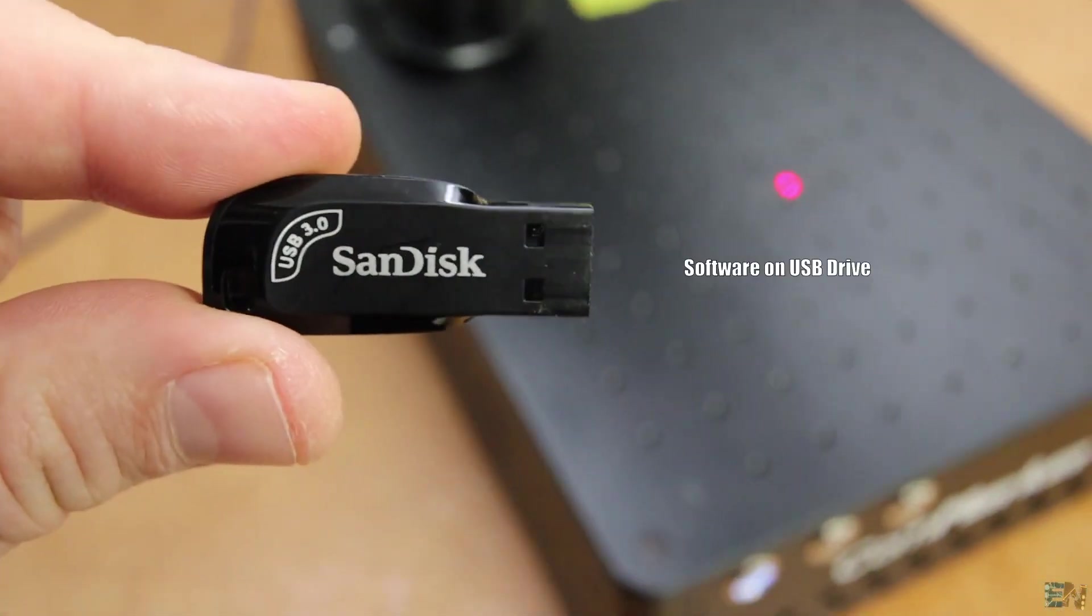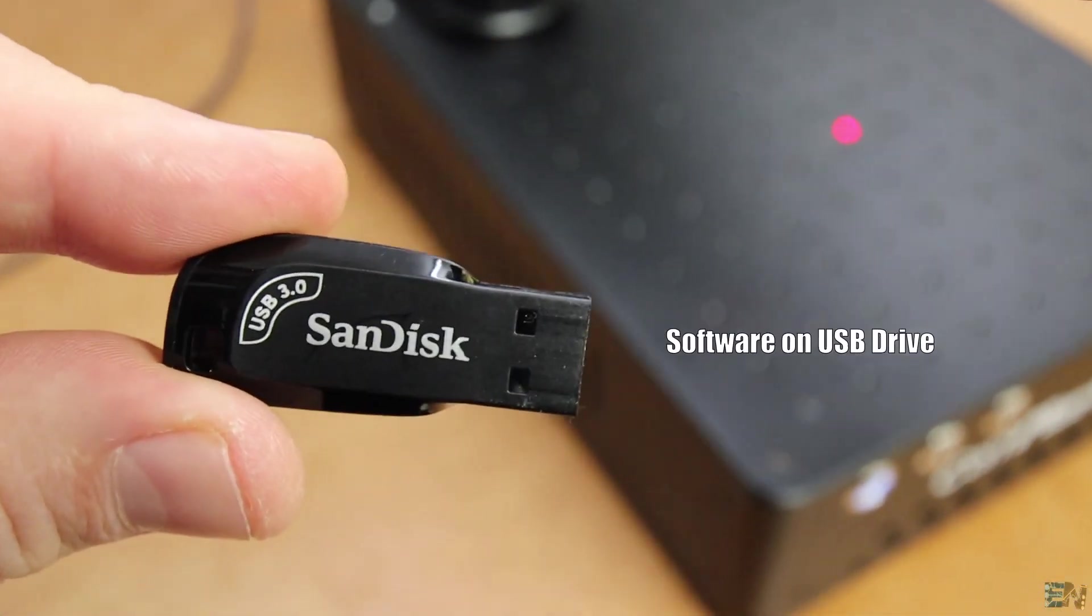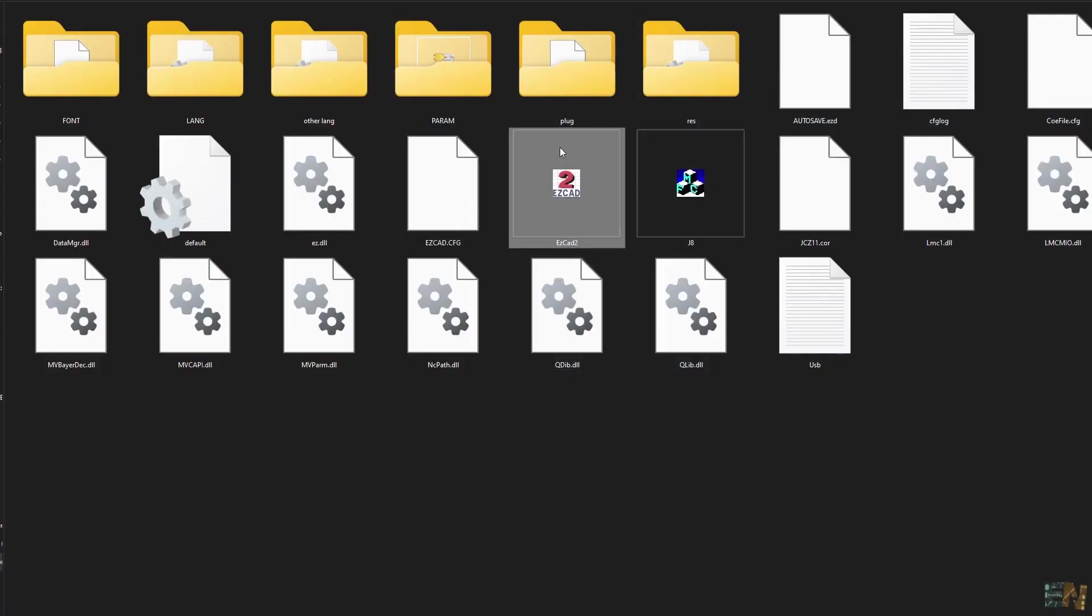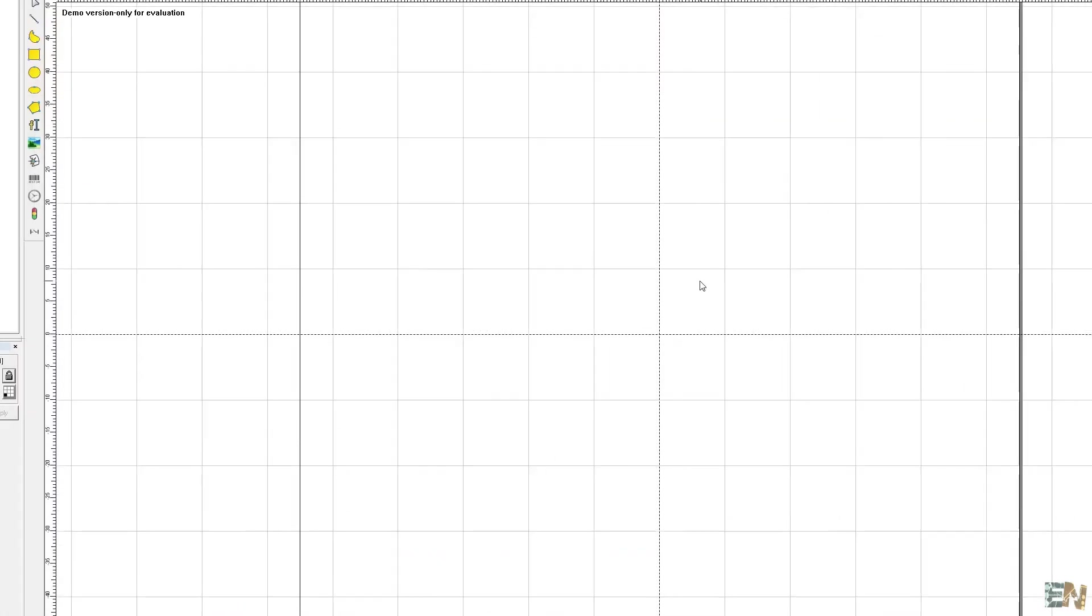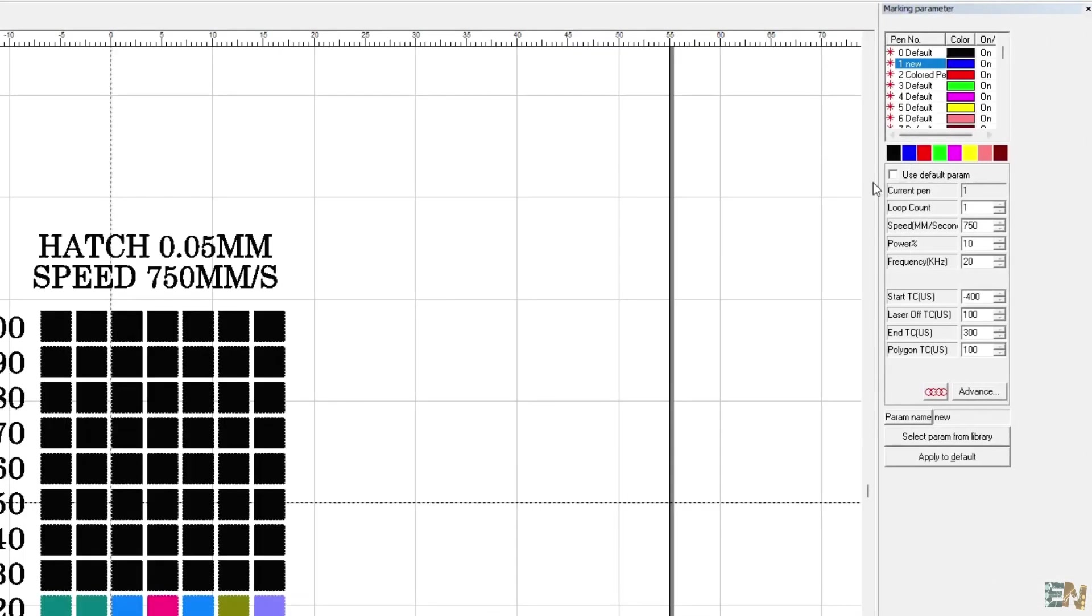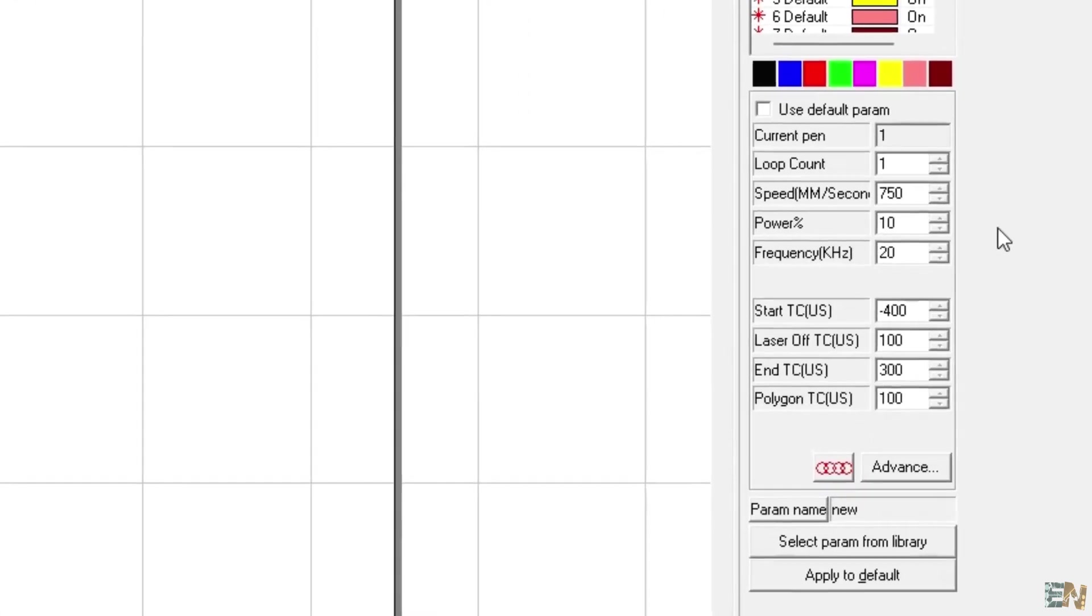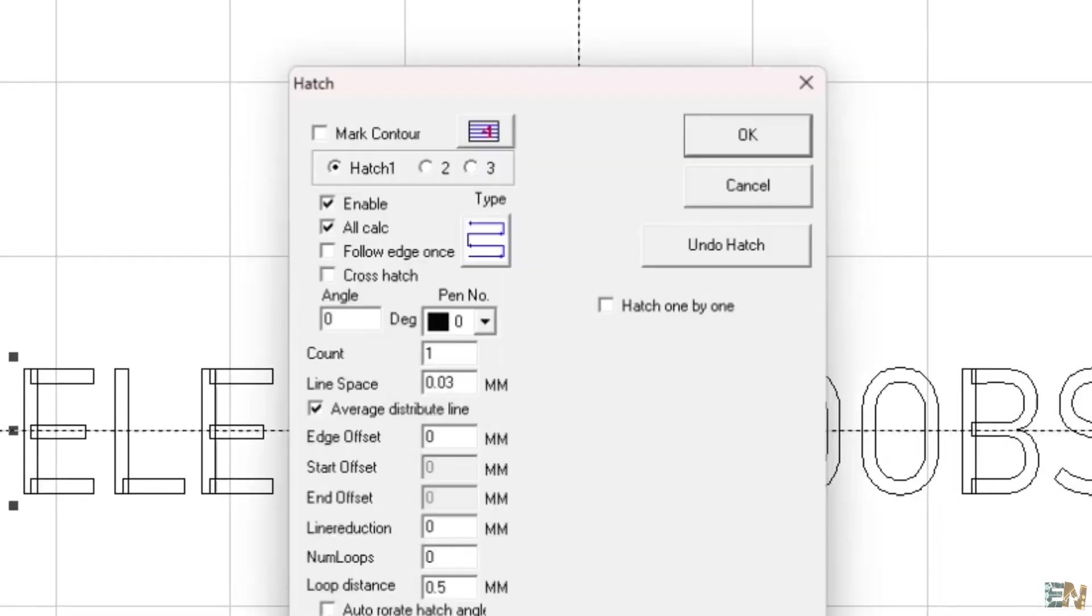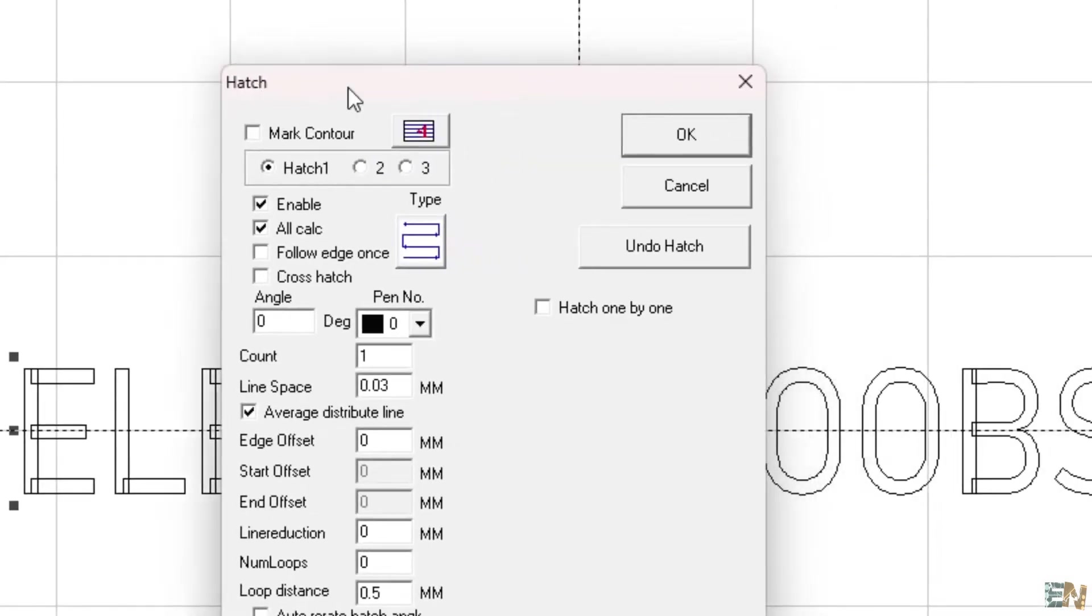The machine works with Lightburn or EZCAD. So from the USB drive, install the EZCAD software and open it and let's make some tests. The most important settings are here. As you can see, we can control the power, the speed, but in this case also the frequency. Another setting that you could change is the hatch but that's for later.